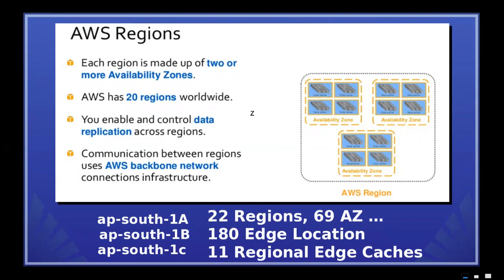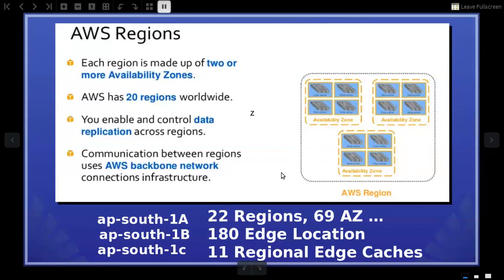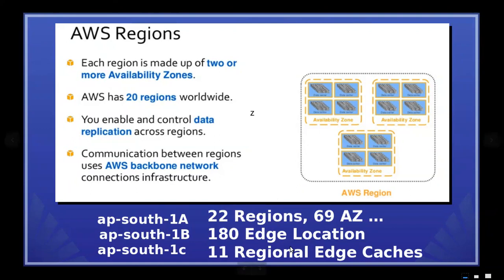Worldwide there are 22 regions. A region is not just a group of data centers — it is a group of availability zones. Not a single group of data centers, but a group of availability zones.